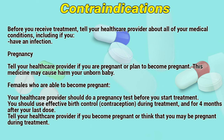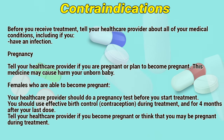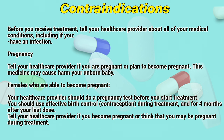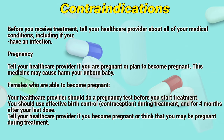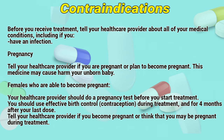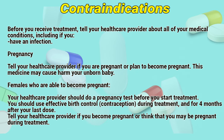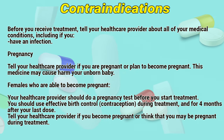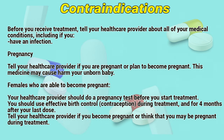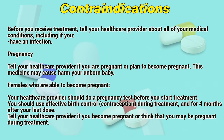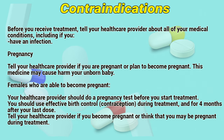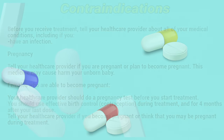Contraindications. Before you receive treatment, tell your healthcare provider about all your medical conditions, including if you have an infection. Tell your healthcare provider if you are pregnant or plan to become pregnant. This medicine may harm your unborn baby. Females who are able to become pregnant should have a pregnancy test before starting treatment. You should use effective birth control during treatment and for 4 months after your last dose. Tell your healthcare provider if you become pregnant or think you may be pregnant during treatment.